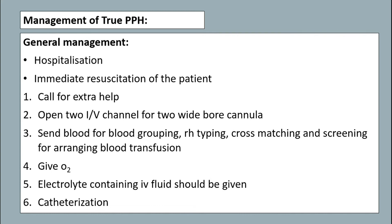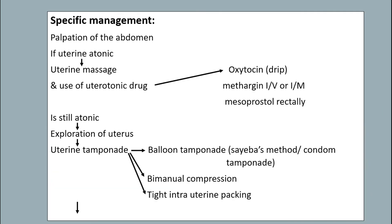General management of true PPH includes hospitalization, immediate investigation, call for extra help, open two IV channels with two wide-bore cannulas, send blood for grouping and cross-matching and for transfusion. Give oxygen, electrolyte-containing IV fluids, and catheterization. Specific management: prepare the abdomen. If uterine atony is present, uterine massage should be done and use of uterotonic drugs should be given. If still atonic, expression of the uterus and uterine tamponade should be given.